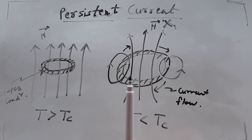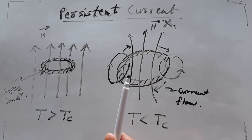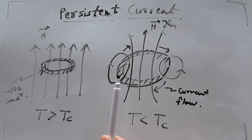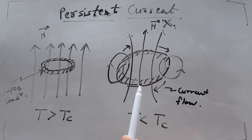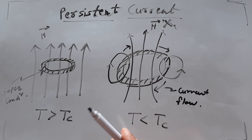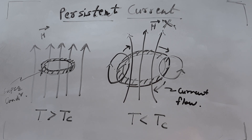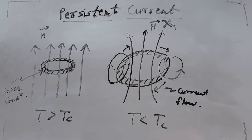Such a steady current flowing with undiminished strength — 'undiminished' means the current is not getting reduced — is called persistent current. Please draw the diagram as well; you can pause the video to do so.